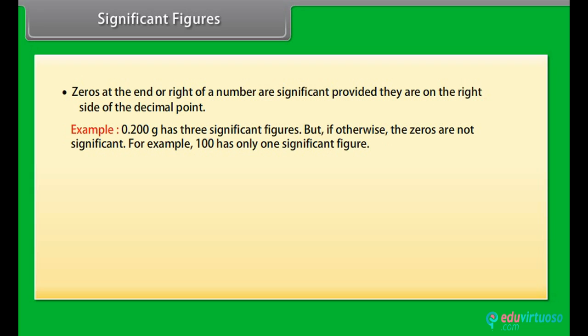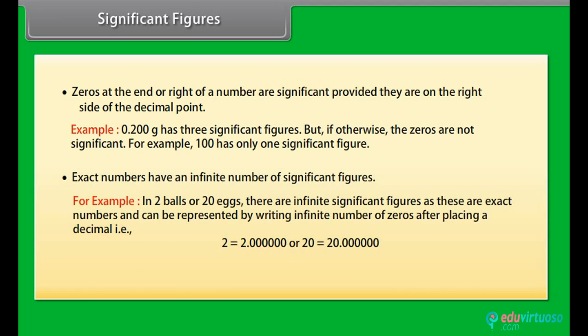But if otherwise, the zeros are not significant. For example, 100 has only one significant figure. Exact numbers have an infinite number of significant figures. For example, in two balls or 20 eggs, there are infinite significant figures as these are exact numbers and can be represented by writing infinite number of zeros after placing a decimal. That is 2 = 2.0000 or 20 = 20.0000. 4.01 × 10^2 has three significant figures and 8.256 × 10^-3 has four significant figures.